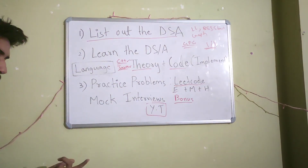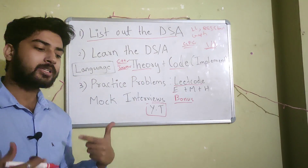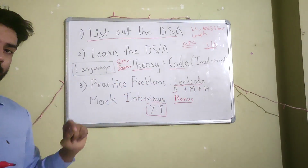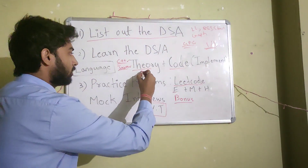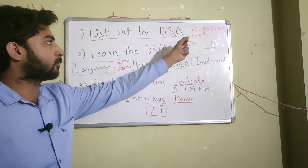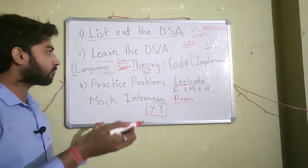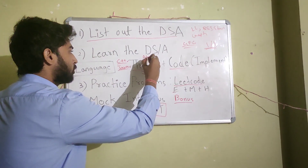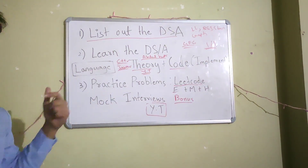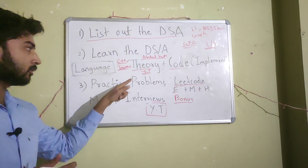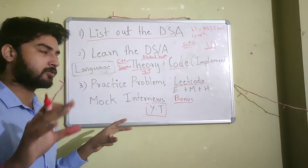For every DSA, there are two important parts: the theory part and the code part. First, learn the theory — for example, if you are on graph, how does DFS work? If you are on linked list, how does the linked list form? The best way to learn the theory of any DSA is YouTube. Search the topic and you will find so many videos. Channels like Abdul Bari — who is a legend — and Tushar make very amazing videos on the theory part of DSA. Learn the theory thoroughly and be able to conceptualize how the DSA works.